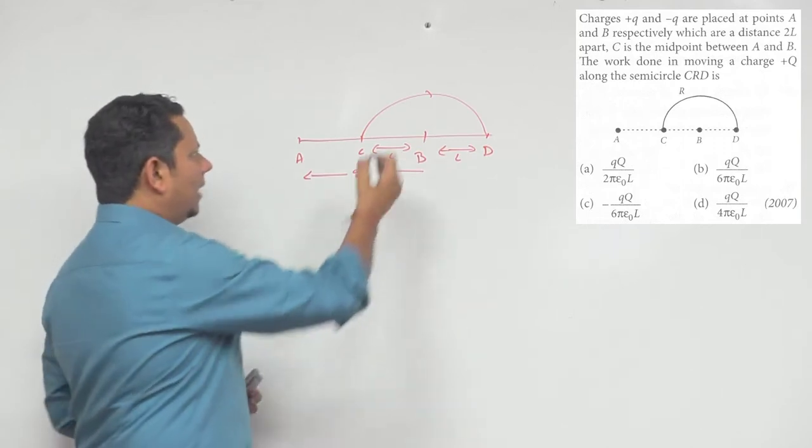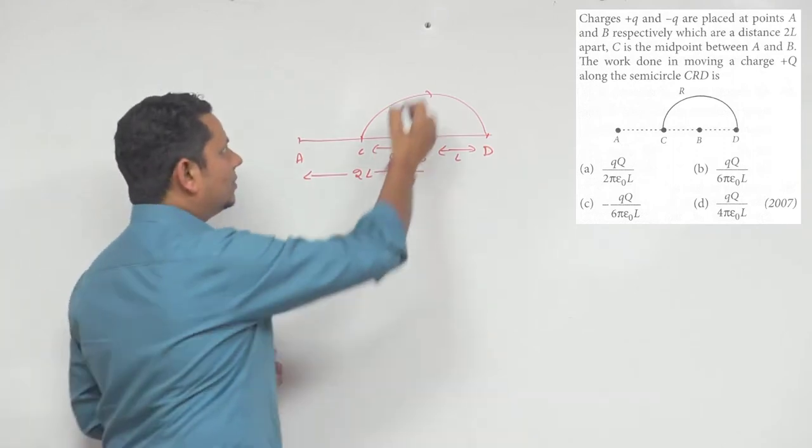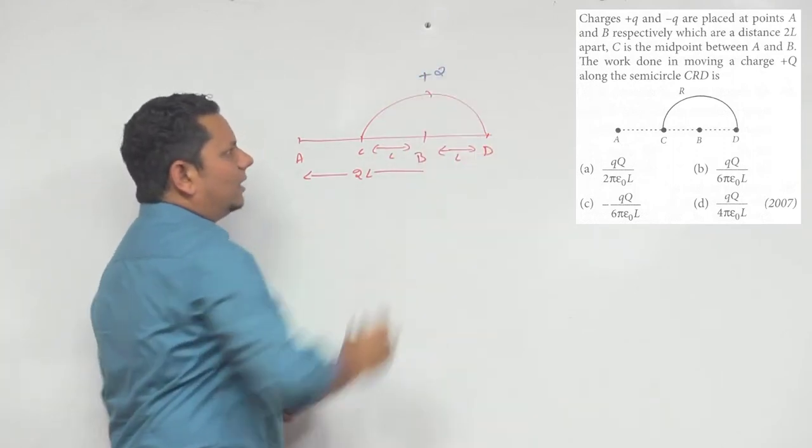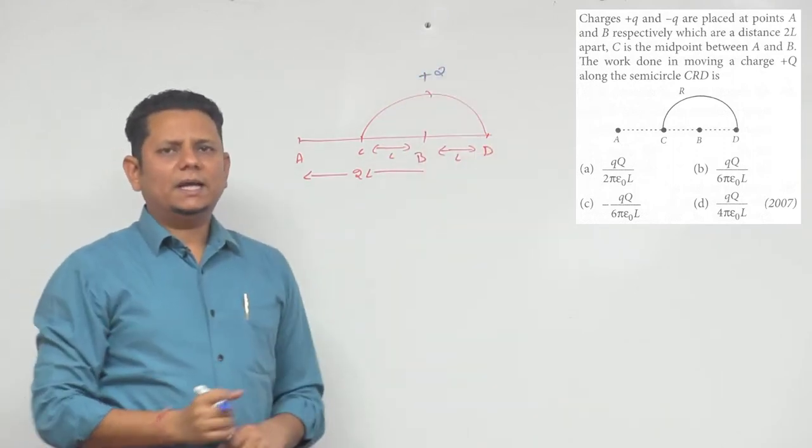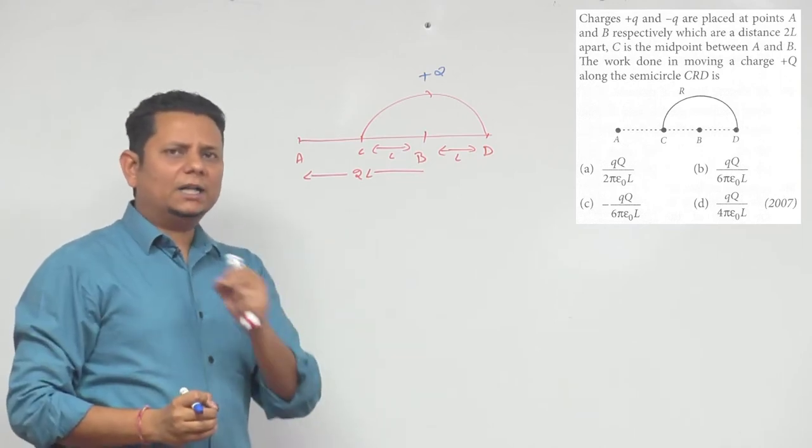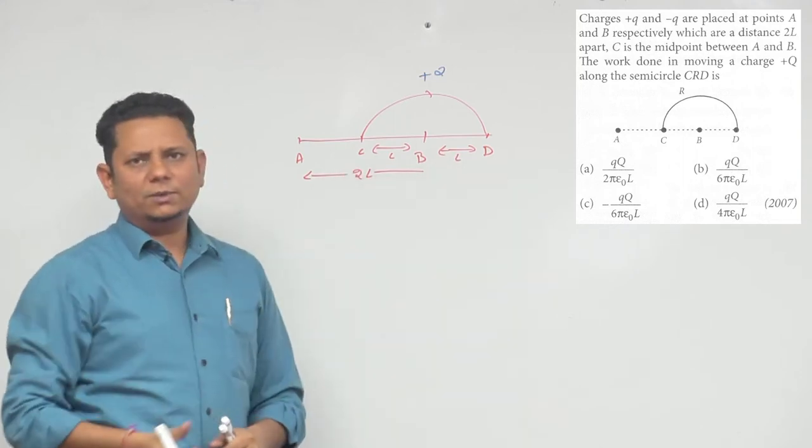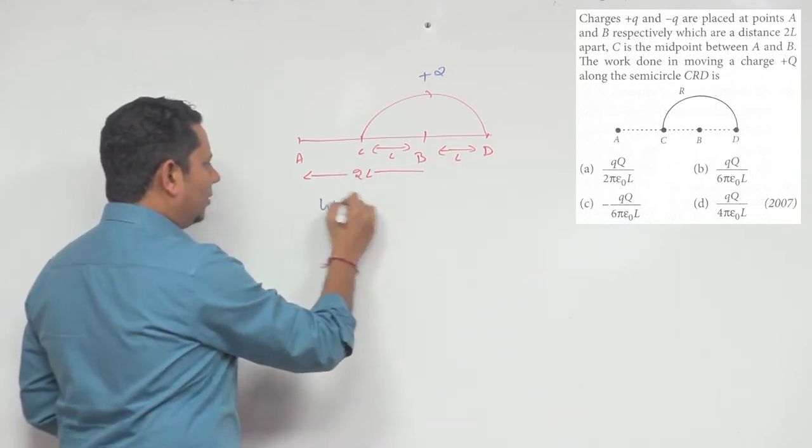We need to tell how much work done will be when we take the point from here to there, when we take a +Q charge. Now, we know electrostatic is a conservative force, so the work done will not depend on the path. So your work done will depend on the potential at the initial and final points.